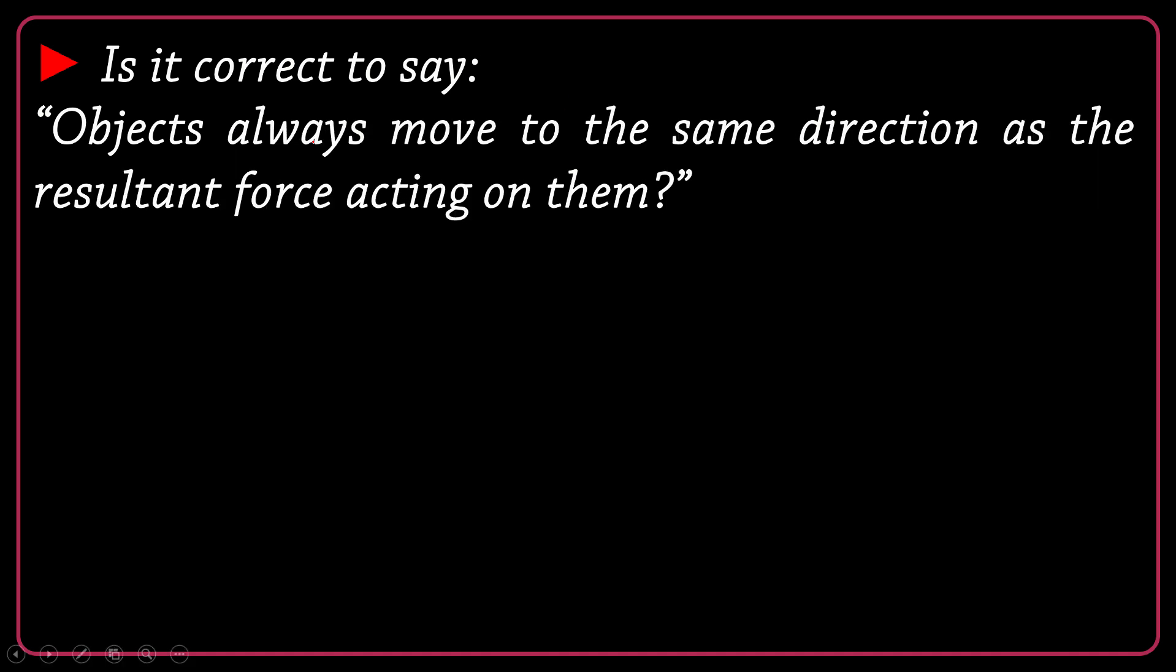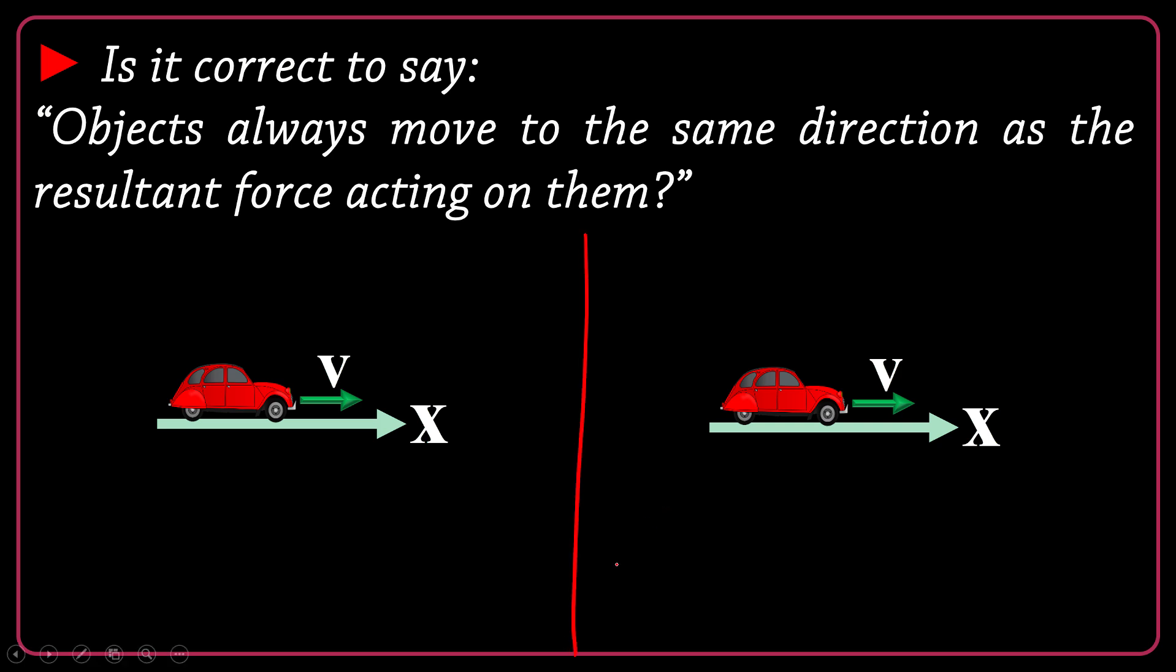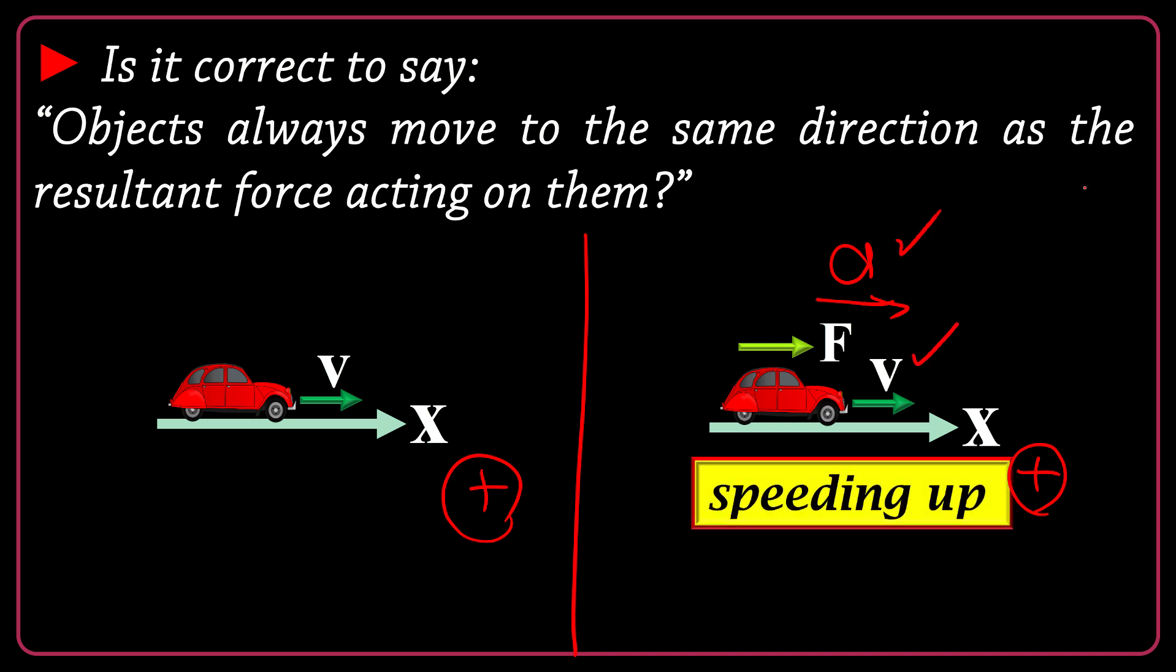Is it correct to say objects always move to the same direction as the resultant force acting on them? Let's see. I have a couple of cars both moving rightward. Let's say the positive direction is rightward. In the right case, let's say the total net force acting on the object is also rightward. So I expect the acceleration also to be rightward. As the acceleration and velocity have the same direction, the object will speed up. So if the resultant force acting on the object and the motion of the object have the same direction, I can say the object is speeding up.